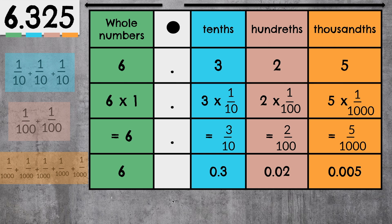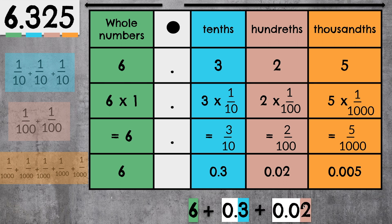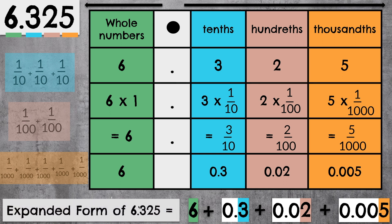So we can write that 6 wholes plus 0.3 plus 0.02 plus 0.005 is the expanded form of 6.325. If we add these together, we get 6 and 325 thousandths.